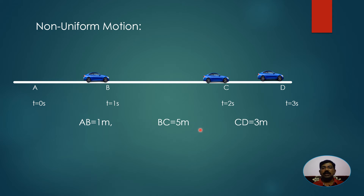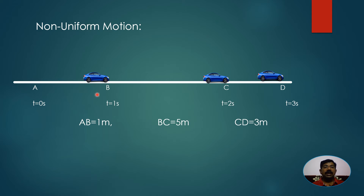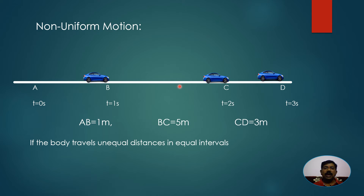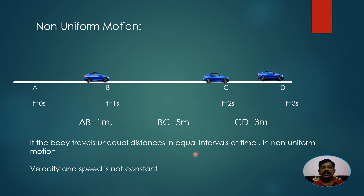The time differences are equal - 1 second each interval - but the car travelled unequal distances: 1 meter, then 5 meters, then 3 meters. If any object travels unequal distances in equal intervals of time, the body is said to be in non-uniform motion. In non-uniform motion, velocity and speed are not constant - they vary. The speed of the car in the first second is 1 m/s, in the second interval 5 m/s, and in the third 3 m/s.